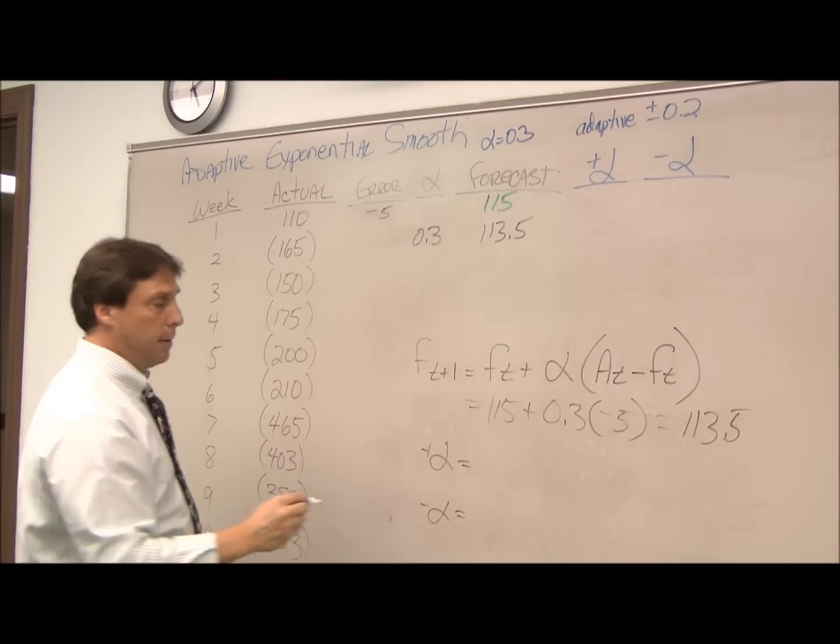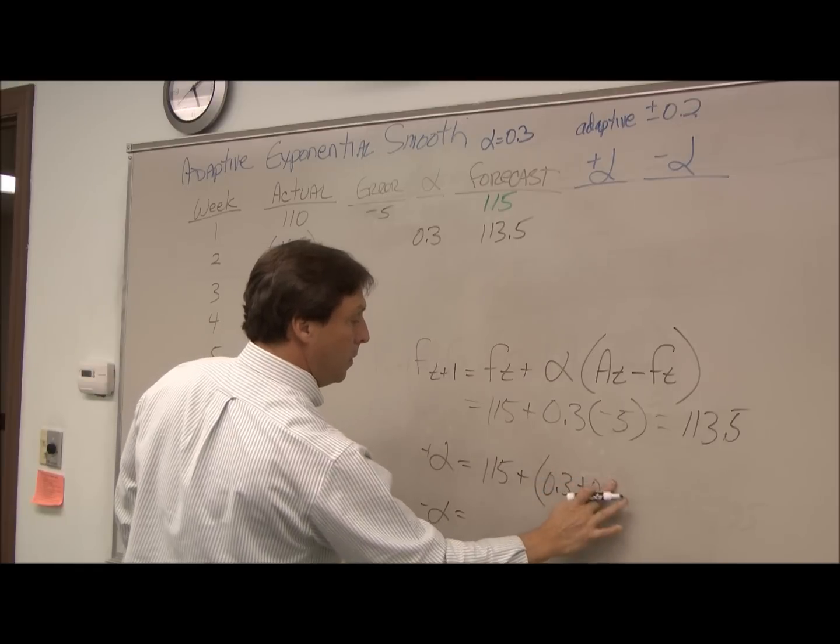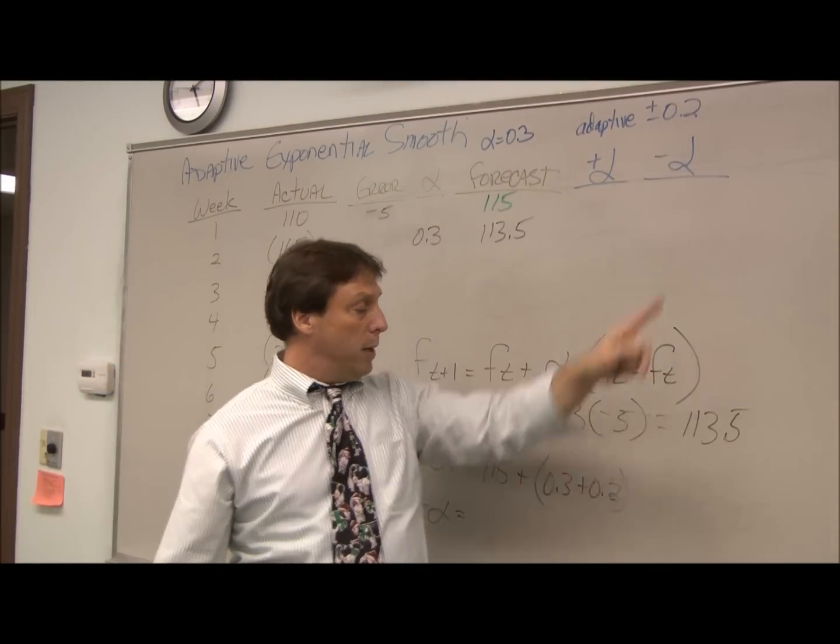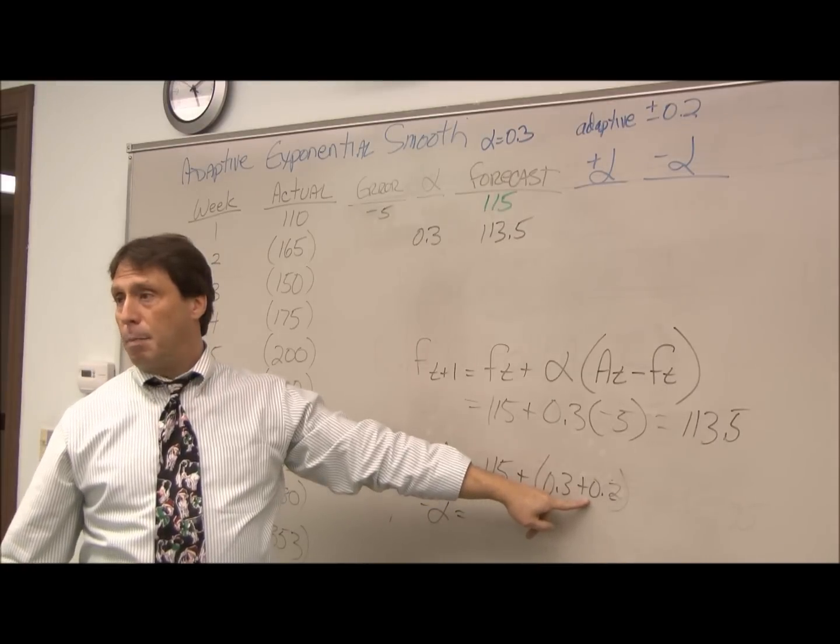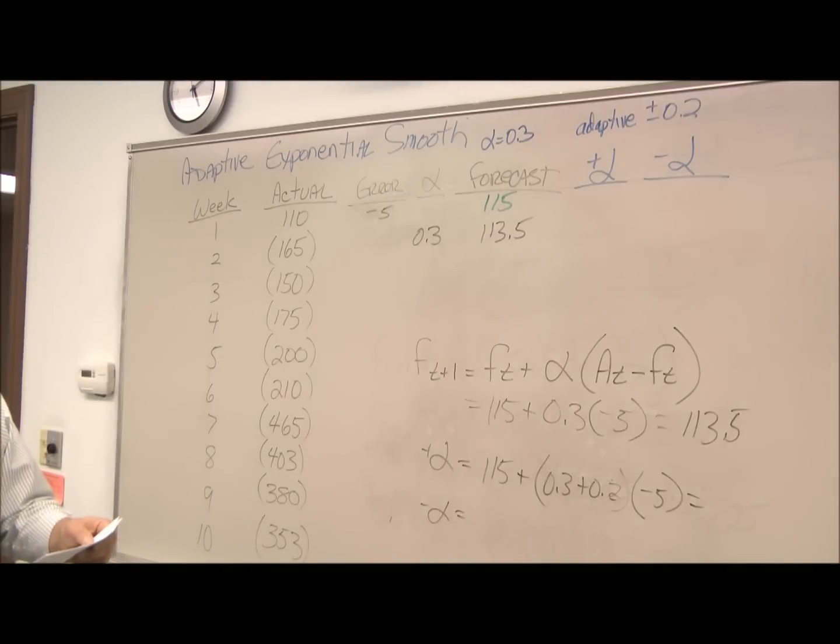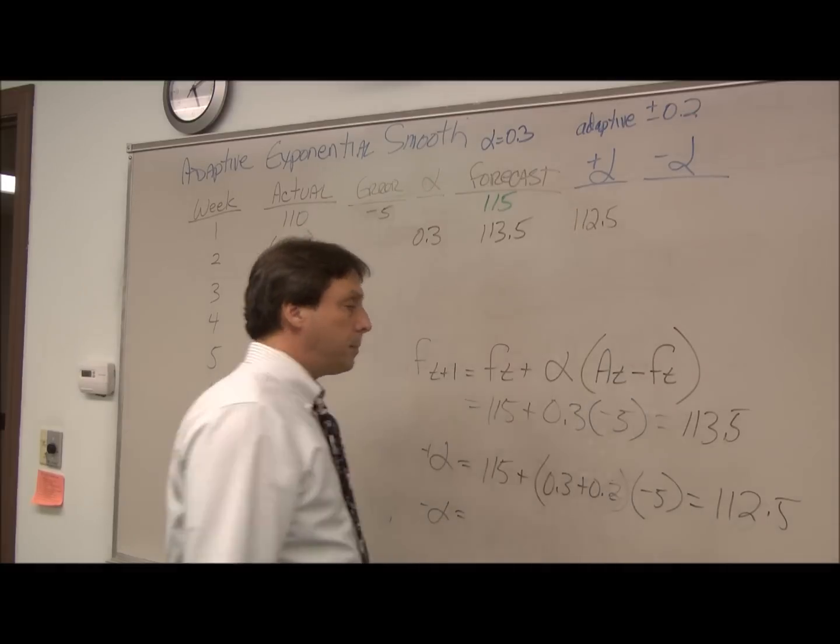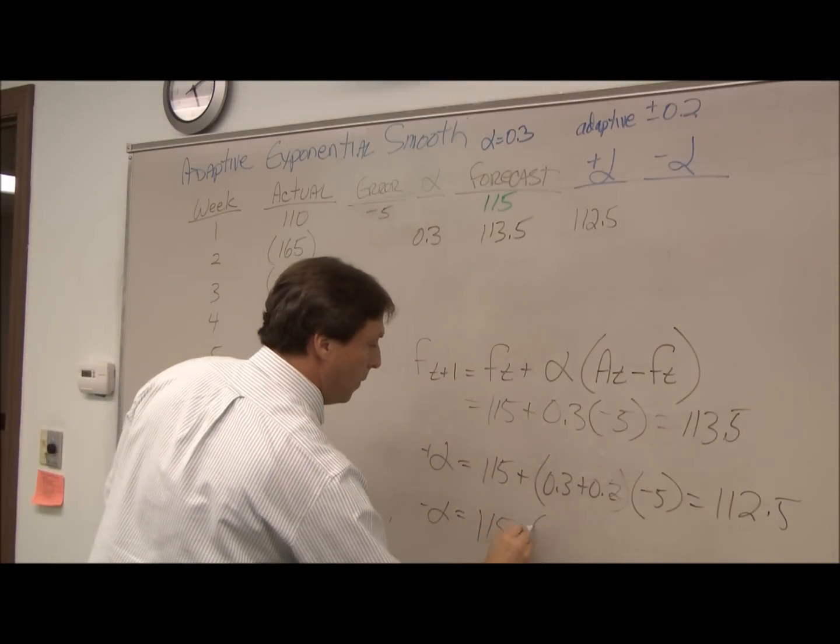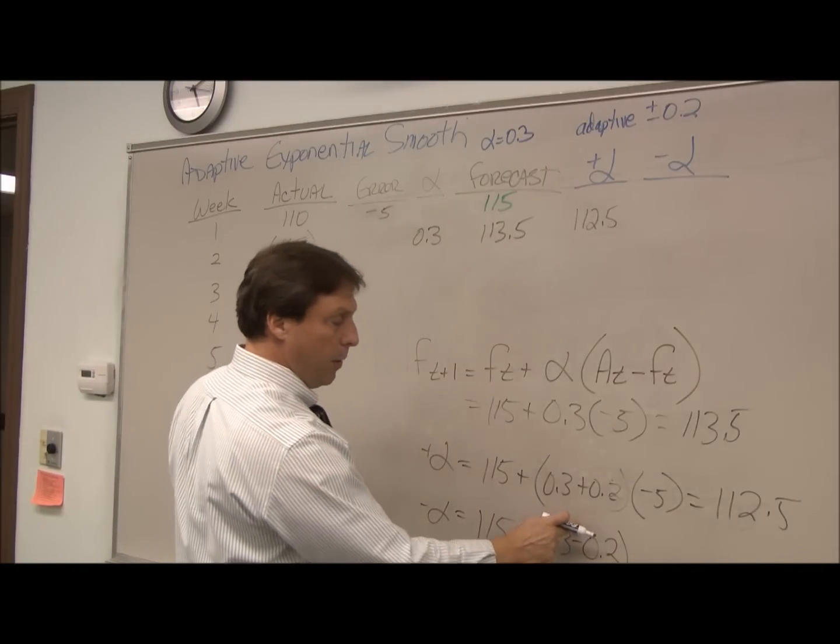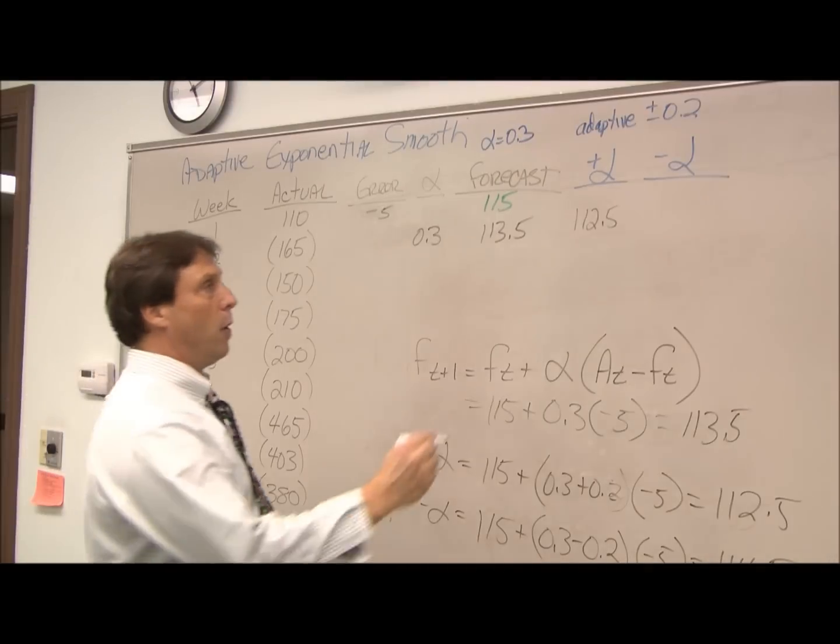For my plus alpha, my alpha currently is 0.3 and my adaptive rate is 0.02, so for plus alpha I just add the 0.02 to the 0.3. I have the same error, and so for my plus alpha this comes out to 112.5. We do the same thing for minus alpha—this time we subtract 0.02, so my new alpha is 0.1 here, and that comes out to 114.5.